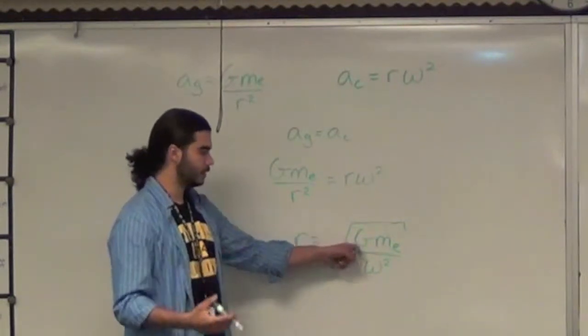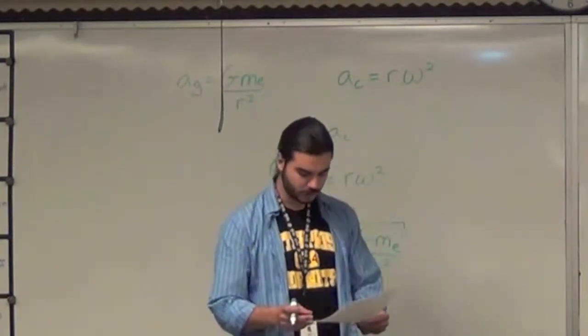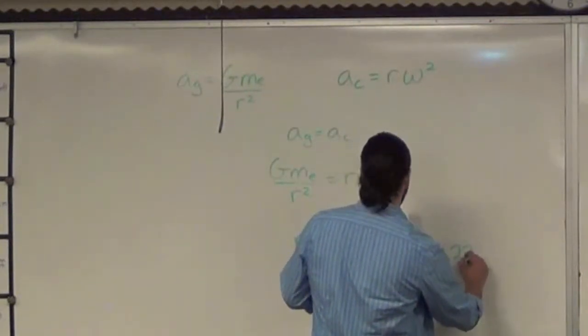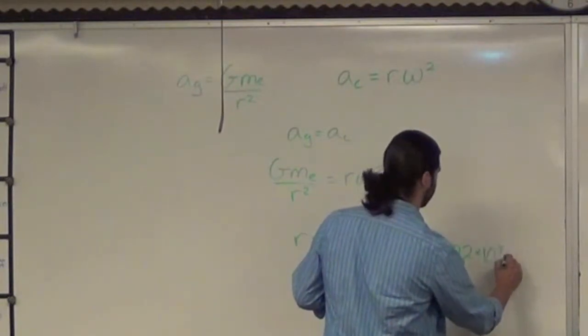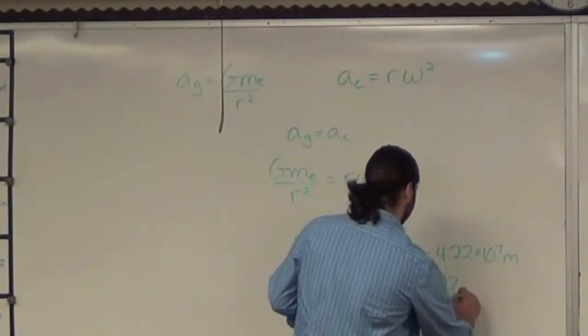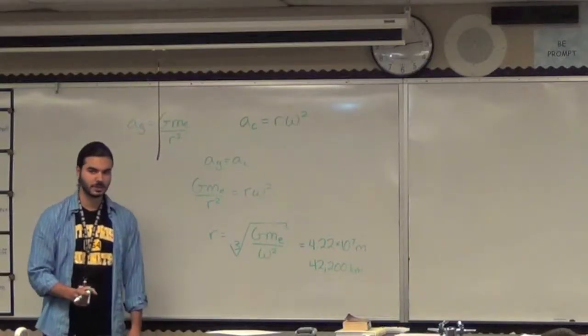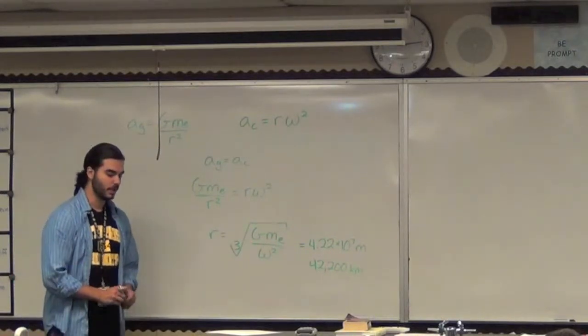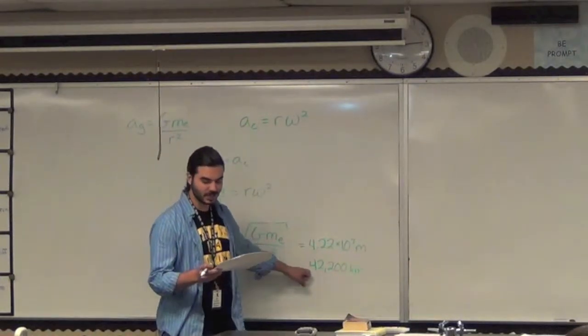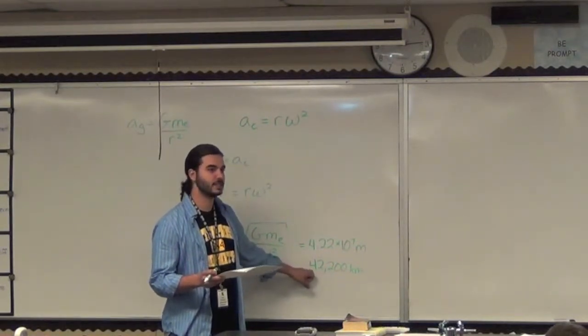So again, plug in the value of g, the value for the mass of the Earth, and one rotation per day in radians per second. I already did this, so don't worry about it. You end up getting that r is equal to 4.22 times 10 to the 7 meters, which, to put that in a little bit of context, is 42,200 kilometers. Kilometers is a little bit shorter than a mile. Almost 40,000 miles. How long is that, like, as compared to the diameter of the Earth? As compared to 42,200 kilometers, the diameter of the Earth is 12,700 kilometers. So this is 3.3 times longer.